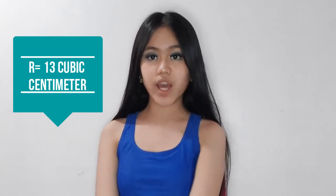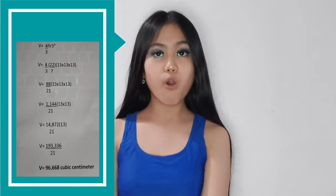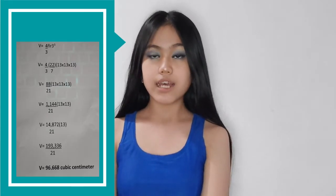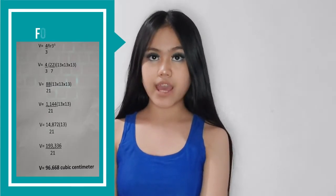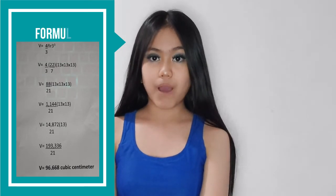We can now calculate the volume of the sphere using the formula. To calculate the volume of the sphere with a diameter of 26, we will use the pi number which is 22 over 7. The formula is: volume equals 4 over 3 times pi times radius to the 3rd power.